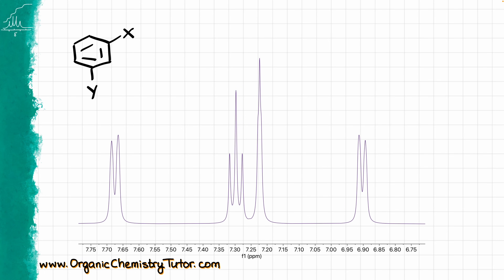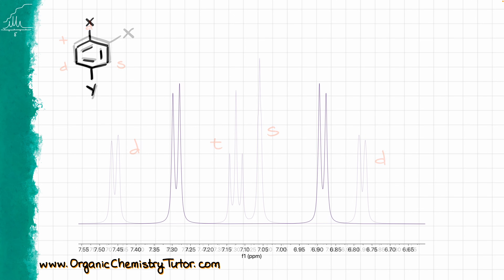When it comes to the meta-substituted aromatic ring, we are looking at a singlet, doublet, doublet, and triplet. Here I have my singlet, my doublet, my doublet, and my triplet — pretty straightforward as well.